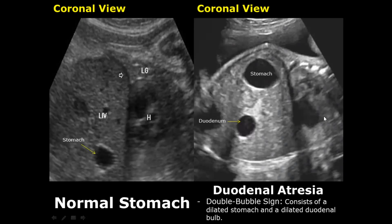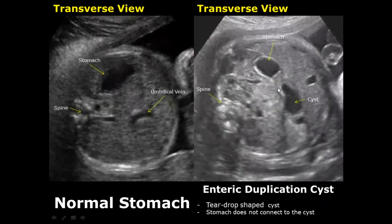An enteric duplication cyst may resemble a double bubble sign or duodenal atresia, but there is one distinguishing feature: the stomach will not connect with the cyst, whereas it will connect with the duodenum. Also, the cyst may be teardrop-shaped.